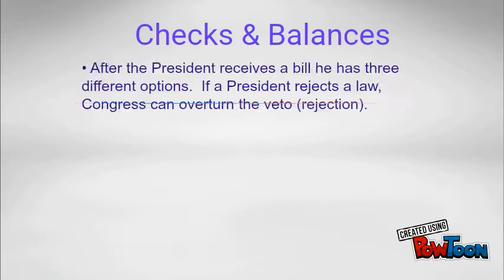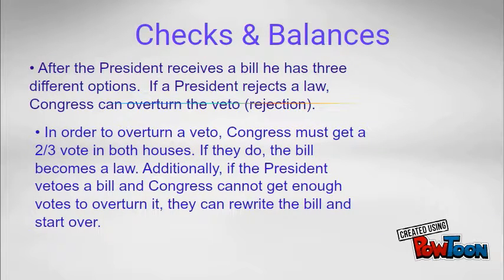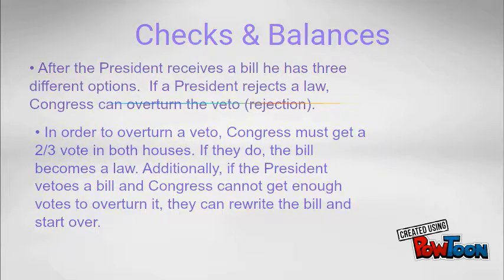Checks and balances is one way to limit the president's power in regards to lawmaking. If a president receives a bill, he has a couple of different options. However, if he rejects the law, Congress can still overturn the veto and turn the bill into a law with a two-thirds vote in both houses.